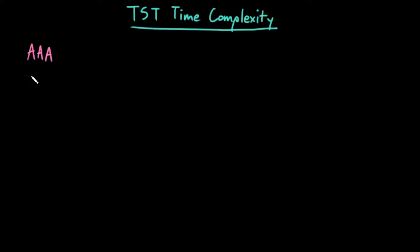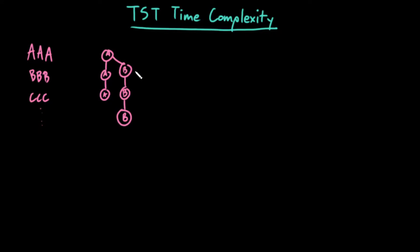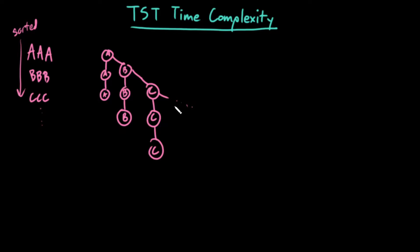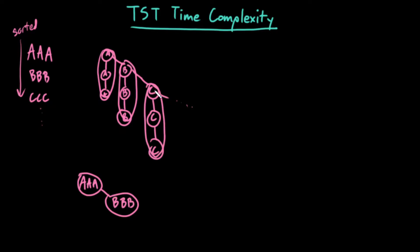For example, if I tried to insert the words AAA, BBB, CCC all the way down, I would basically get a tree whose structure looks like this. So basically, if I insert all of my words in sorted order, I essentially get the bad binary search tree scenario — I get exactly a binary search tree where everything is merged into a linked list. This is the worst case of inserting into a binary search tree.